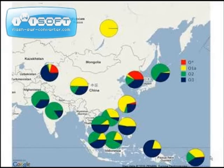It is thought that subclade O2 appeared approximately 30,000 years ago in east Asia, and the people carrying the defining SNP split into two separate migrations: one group went north into northeast Asia, whereas the other continued into southeast Asia. Subclade O3, shown in blue, can be quite frequent in some populations of China, and is thought to provide a historical glimpse into the spread of agriculture into China.